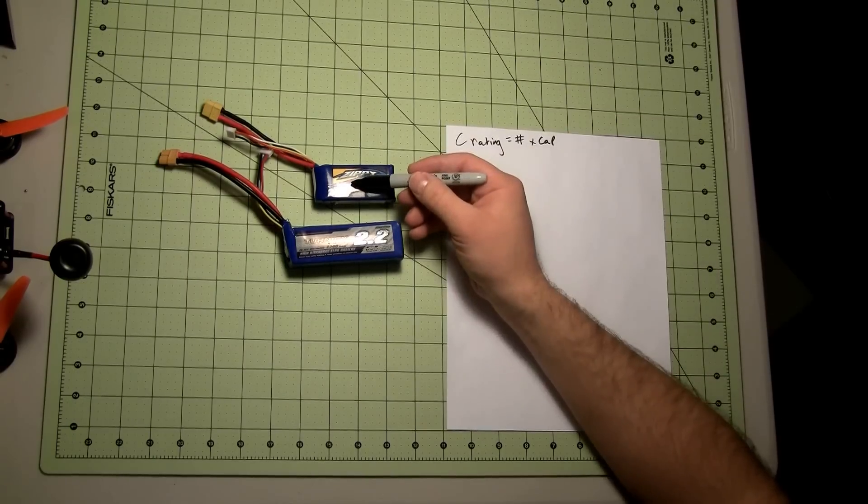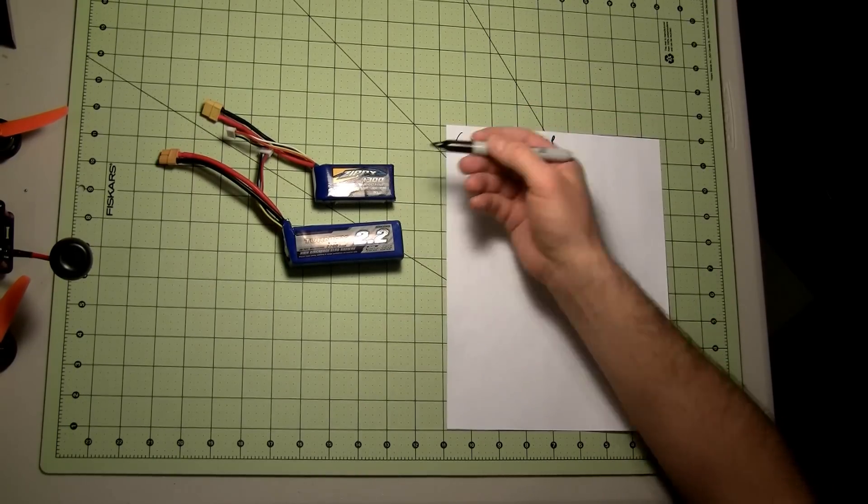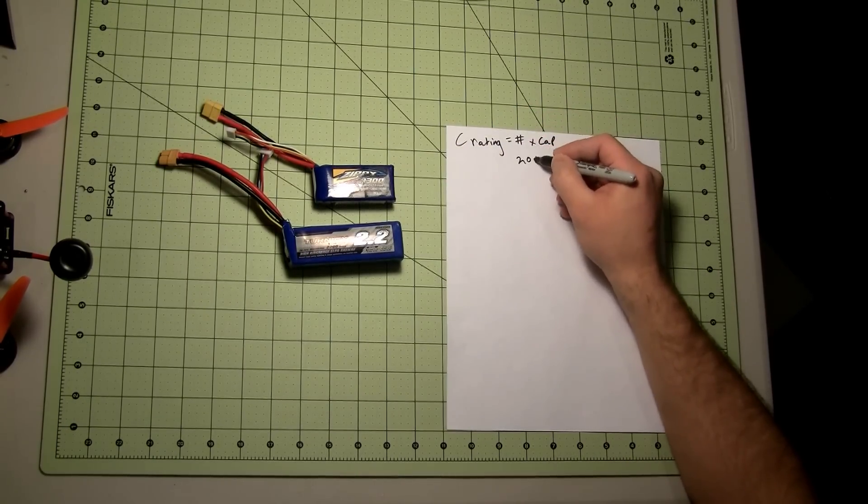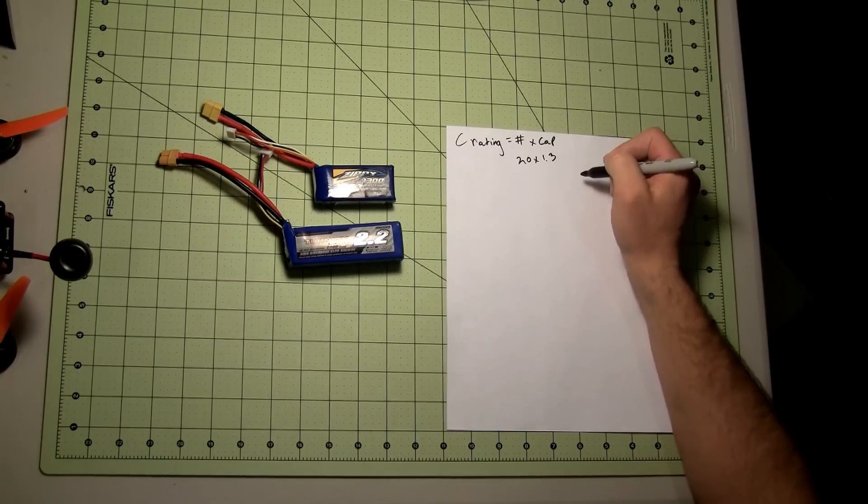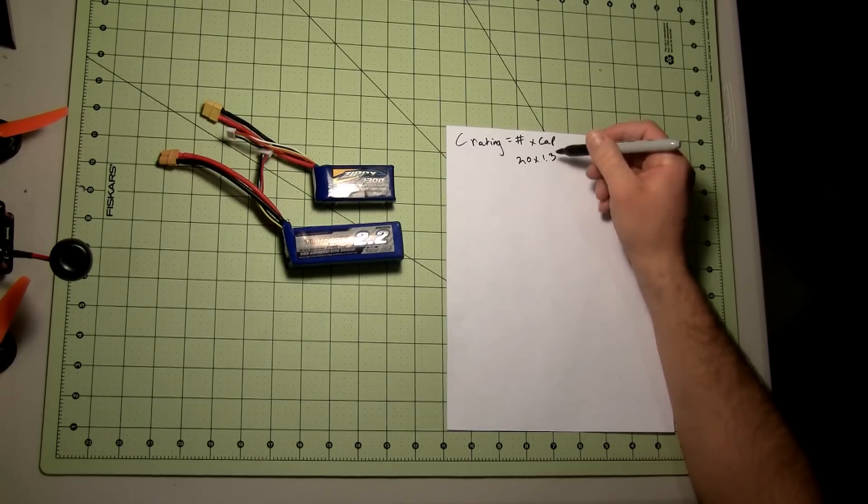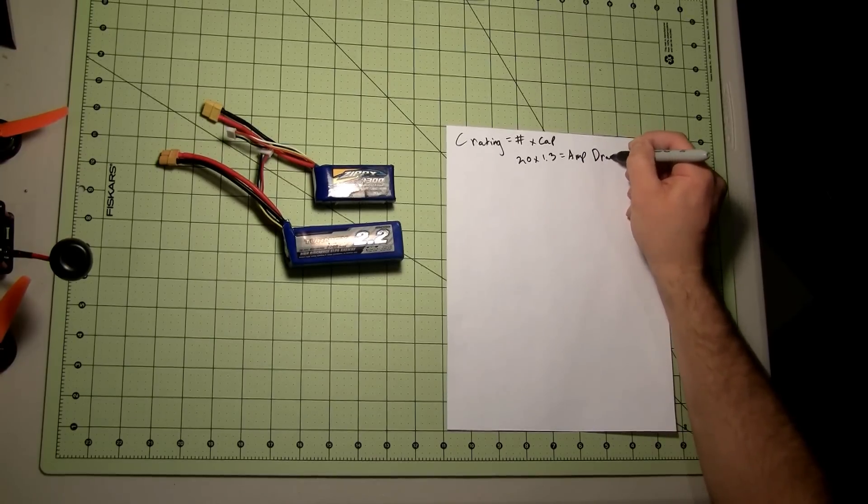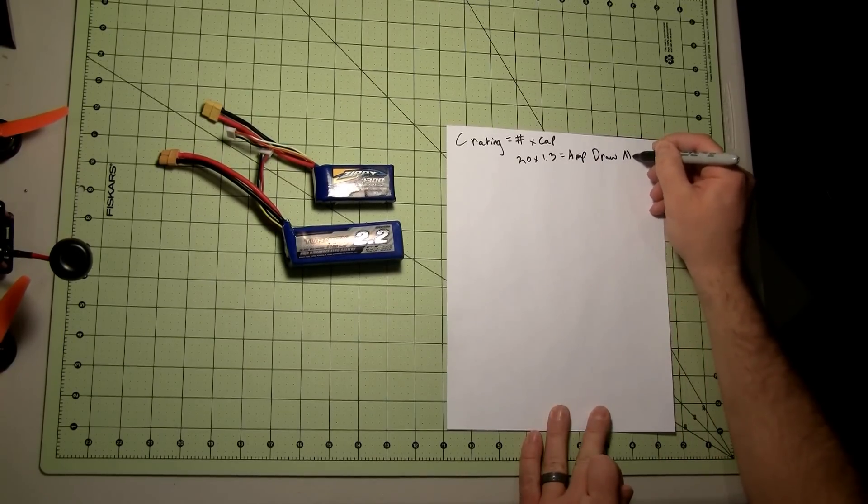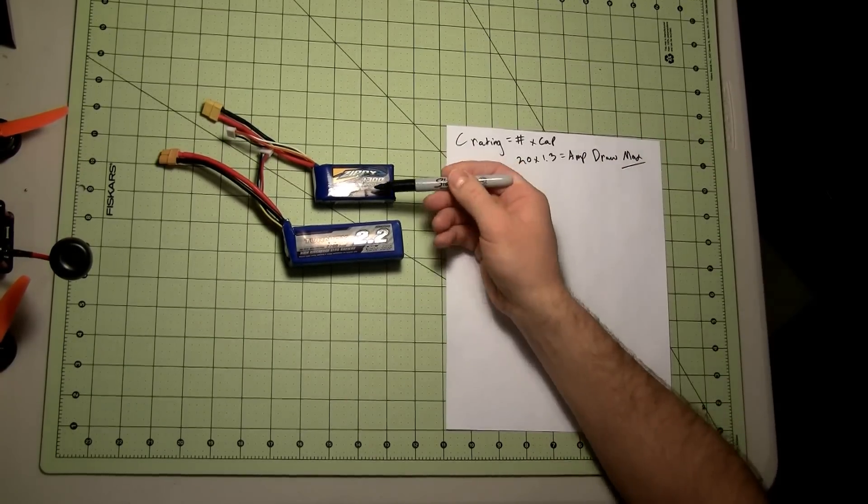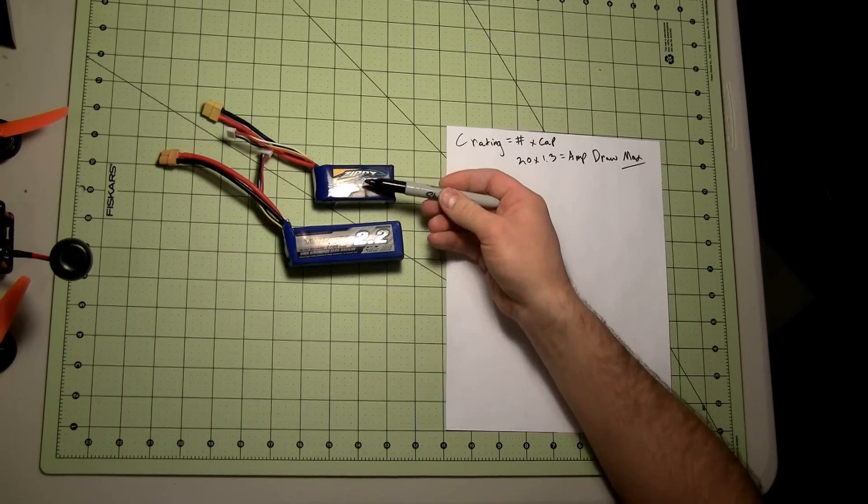If this says it's a 20C for the Zippy, this is 20 times 1.3. That's the most amount of amp draw that this battery can put out. It's the max amp draw that this battery can put out.